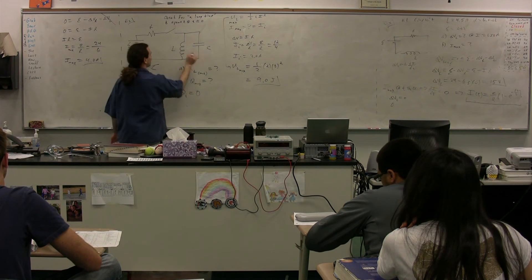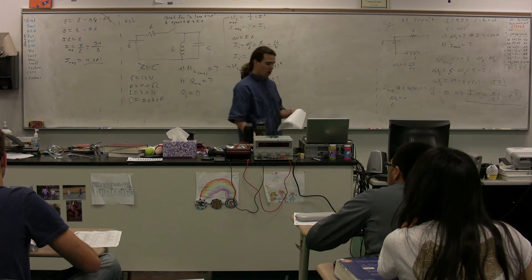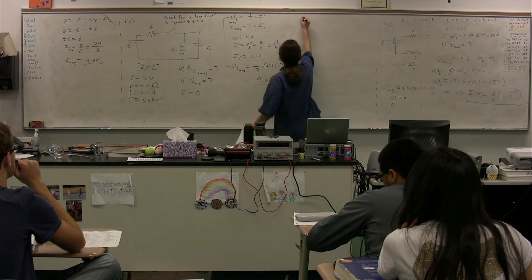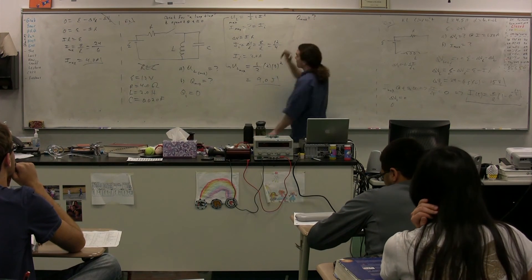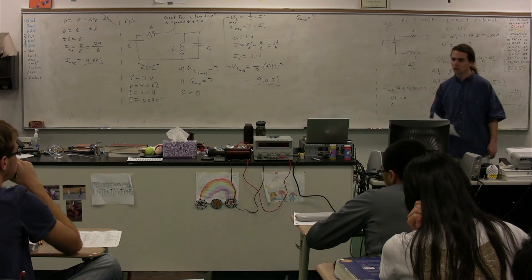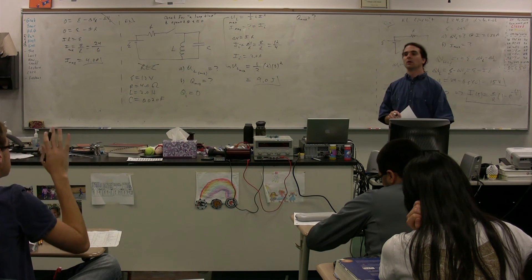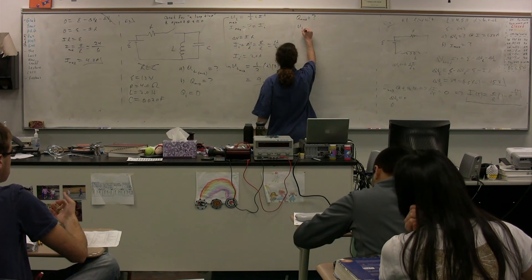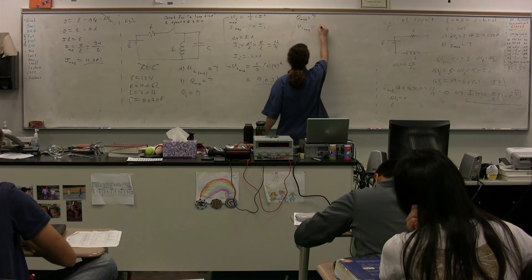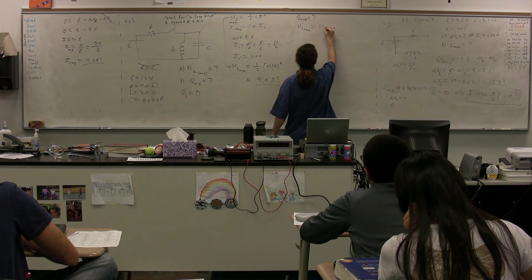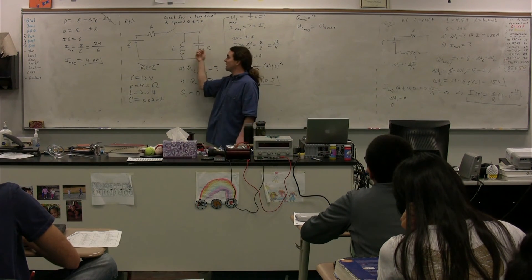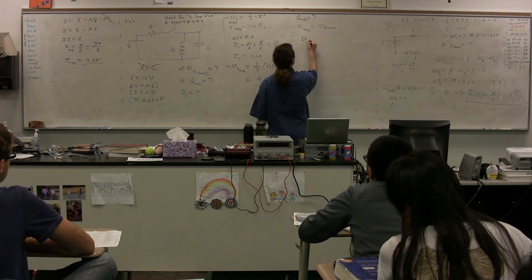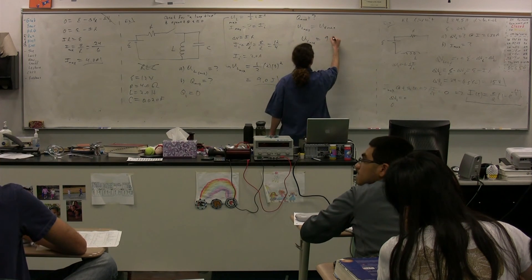Energy is going back and forth between the inductor and the capacitor — simple harmonic motion. We now know that 9 joules of energy are stored in the inductor at its maximum. Our goal is to figure out the maximum charge. The maximum energy of the inductor equals the maximum energy stored in the capacitor, so the maximum energy stored in the capacitor is 9 joules.